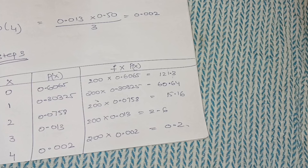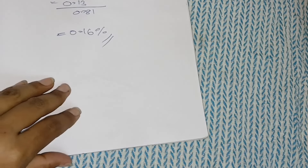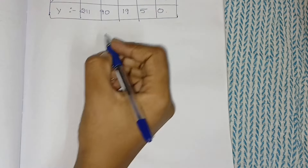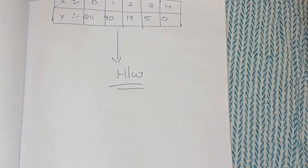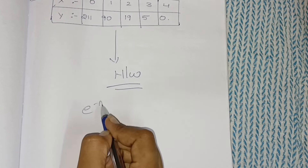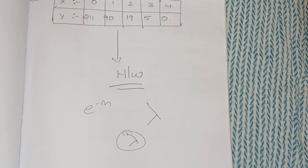If you have any doubts, comment down in the comment section. I will now give a homework problem — you need to practice it and let me know your answer in the comments. It is compulsory homework. First, you need to calculate lambda using sigma fx divided by sigma f, then find e^(−m) from the table. This is the homework problem.